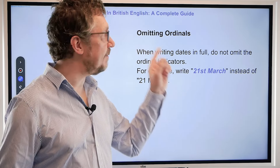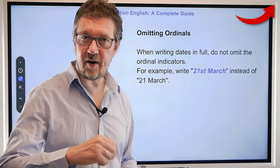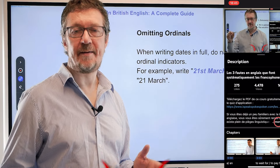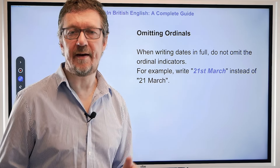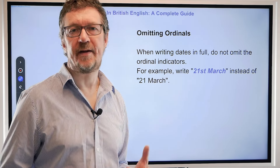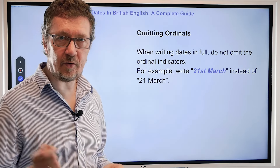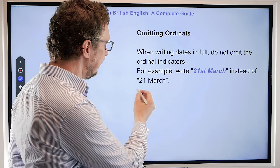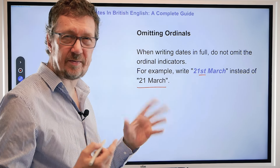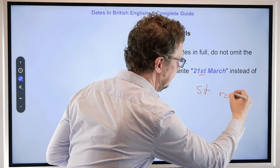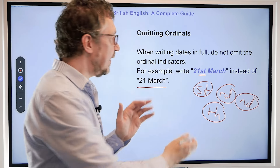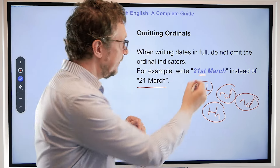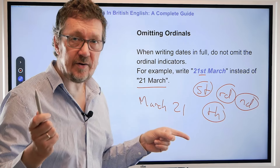Remember everything we've done today is available in the resources above and below the video, including a test and all the slides. What's also important is that you do not omit the ordinals, because in American English they sometimes do. You must have the endings — ST, ND, RD, and TH. Make sure you put these in. Because we have the date number before the month, you have to have the ordinal there. The Americans might write 'March 21' without ordinals, but in British English we always use them.